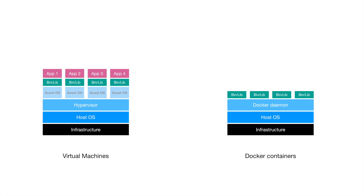Instead of a guest operating system, containers have their own set of dependencies related to the application installed, along with the application code. All of this — the app and its bins and libraries — are bundled in a file known as a Dockerfile. The Dockerfile is used to create a Docker image. A Docker image is basically a blueprint of what your container should have. It's not in a runnable condition right now; it's just an outline that defines which dependencies will be part of your container when it is built.